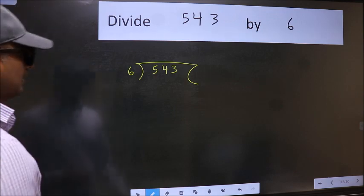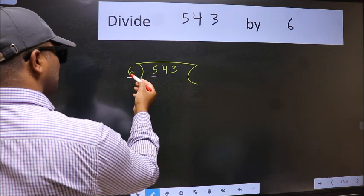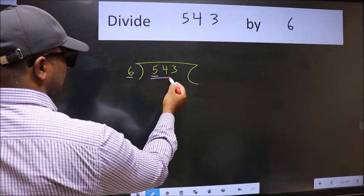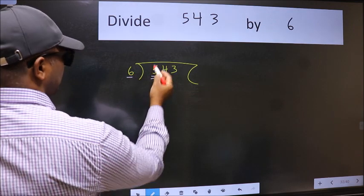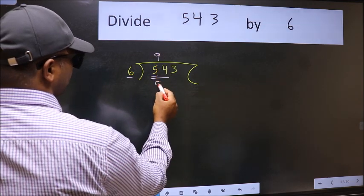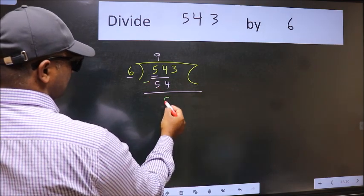Next. Here we have 5 and here 6. 5 is smaller than 6. So take 2 numbers, 54. When do we get 54 in 6 table? 6 nines 54. Now we should subtract. We get 0.